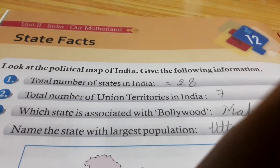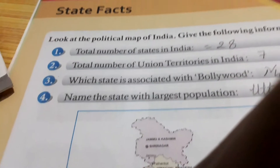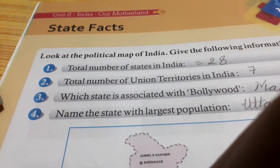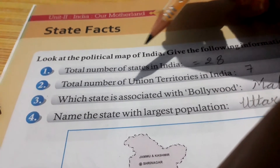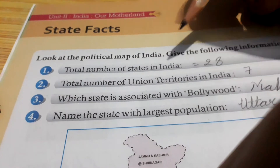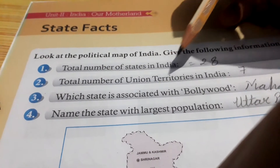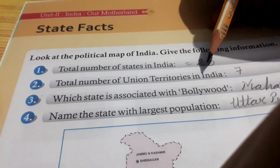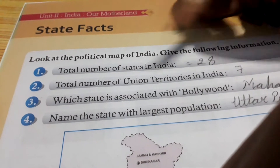Give the following information. First: the total number of states in India is 28. Total number of union territories in India is 7.